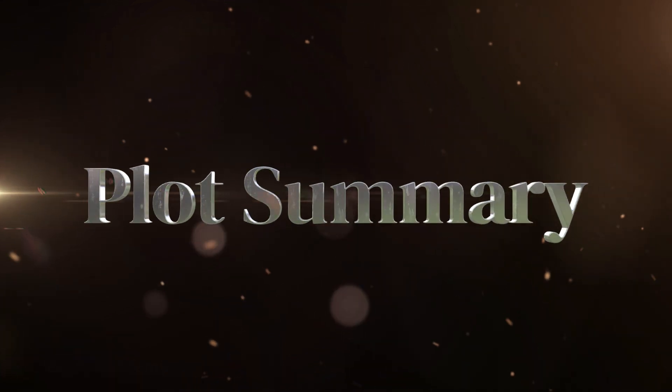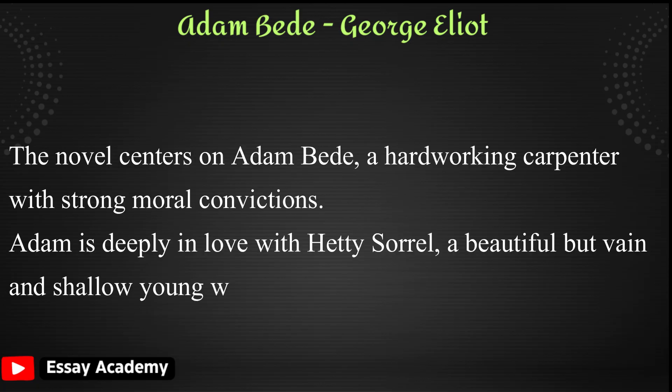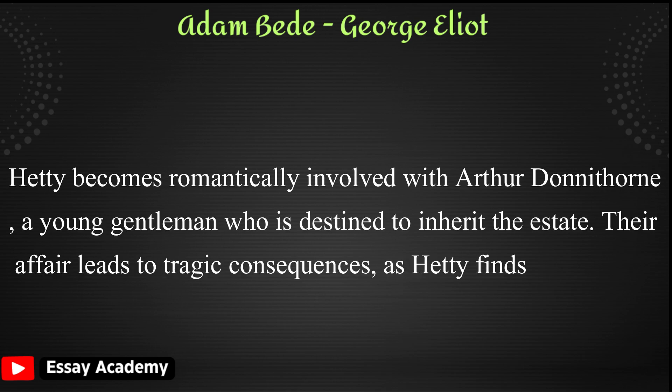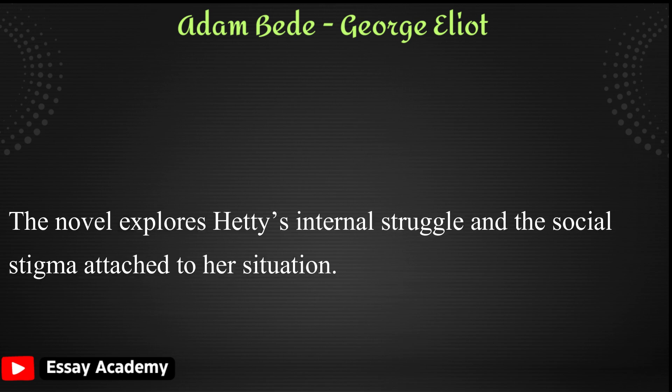Plot Summary. The novel centers on Adam Bede, a hard-working carpenter with strong moral convictions. Adam is deeply in love with Hetty Sorrell, a beautiful but vain and shallow young woman who dreams of escaping her life as a dairymaid. Hetty becomes romantically involved with Arthur Donnythorne, a young gentleman destined to inherit the estate. Their affair leads to tragic consequences, as Hetty finds herself pregnant and abandoned by Arthur. The novel explores Hetty's internal struggle and the social stigma attached to her situation.